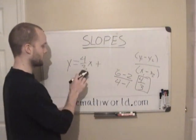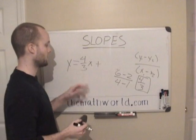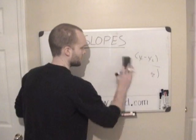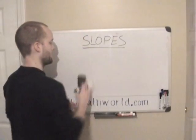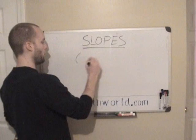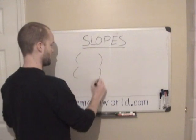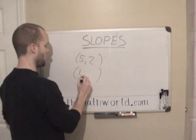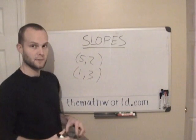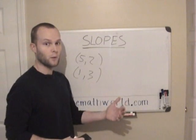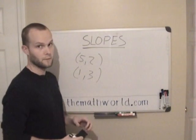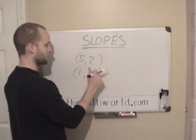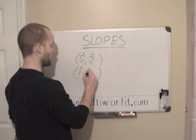So any time we're given the slope, we can find the equation of the problem here. And so that's also what I want to talk about. If we are given two points, let's say (5, 2) and (1, 3), a lot of times they'll say to find the equation of this linear equation.